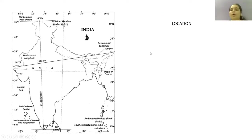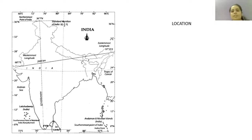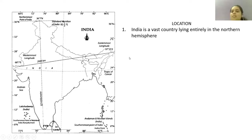Now let us talk about the location of the country. As we know, the equator divides the world into two equal halves. India is located in the northern hemisphere as it is above the equator. India is a very vast country lying entirely in the northern hemisphere.